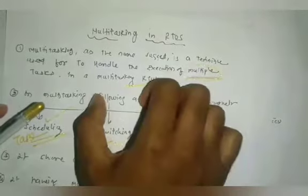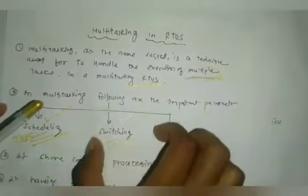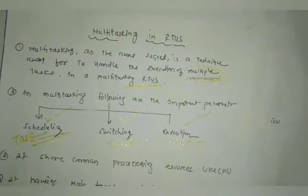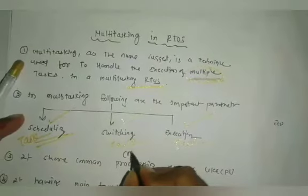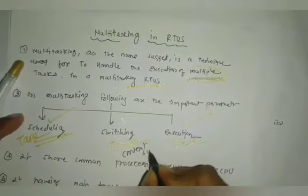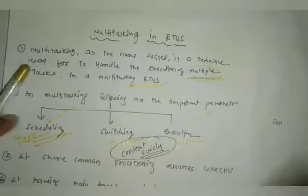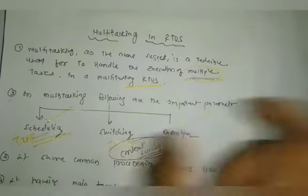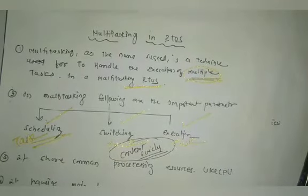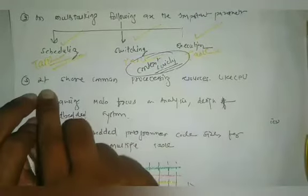Switching means if task one ends, then task two starts; if task two ends, task three starts. It is used for switching from one task to another, and for that it uses context switching. Execution means final task completion.